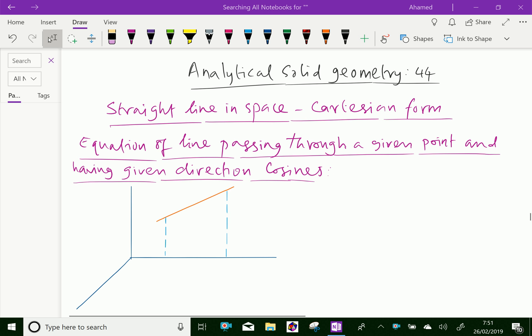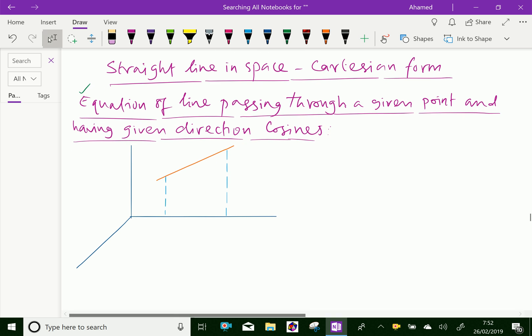Now, you can find equation of a line passing through a given point and having direction cosines. Here, this is an X, Y, Z plane. In that a line is drawn.